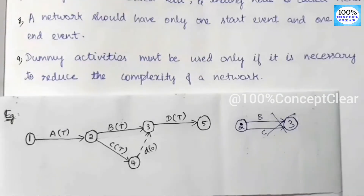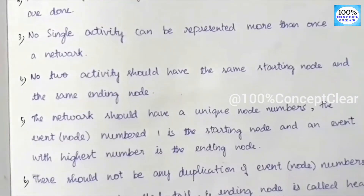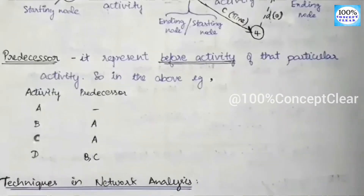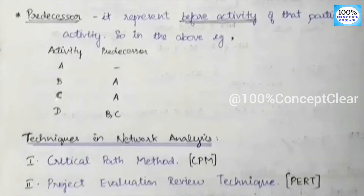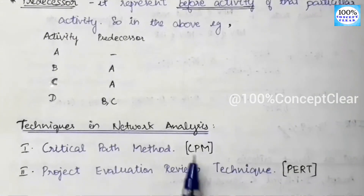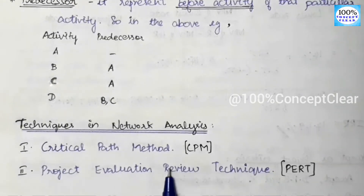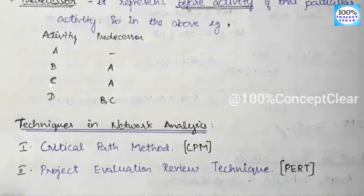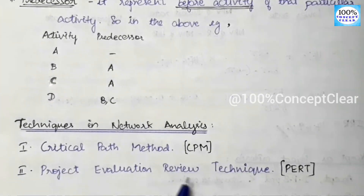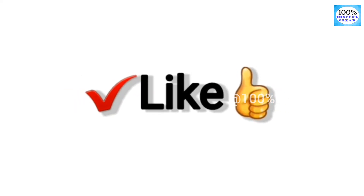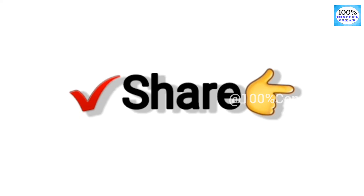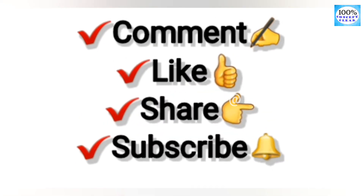These are the important rules while constructing a network diagram. Next, we will see techniques in the network diagram. There are two techniques: PERT and CPM. CPM is Critical Path Method, and PERT is Project Evaluation and Review Technique. We will see these two methods in the next video. If you have any doubts, please like this video, share it with your friends, and subscribe to our channel. Thank you for watching.